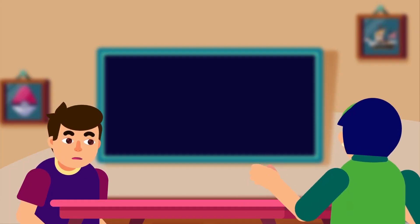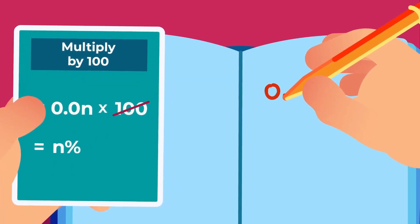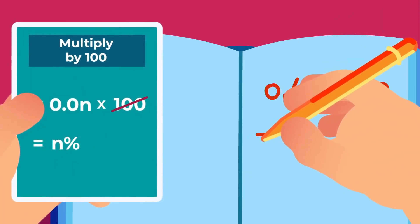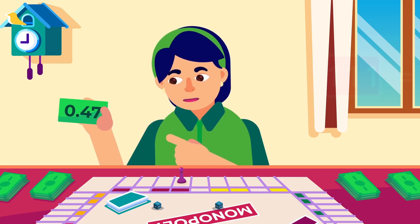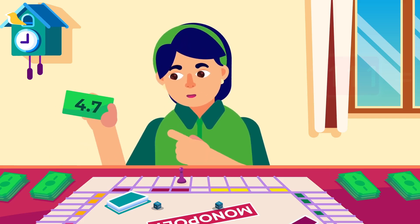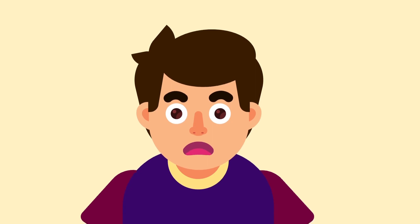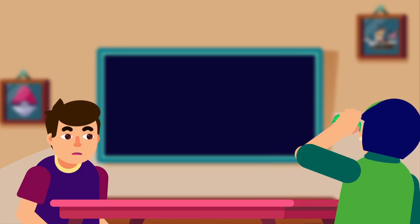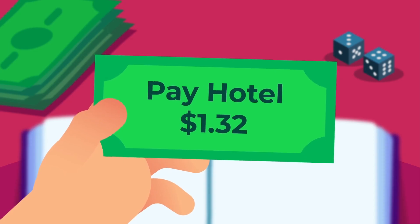And there you have it. Using a shorter method, we could directly multiply 0.47 with 100 to yield 47%. We can do the conversion by simply moving the decimal point two units to the right, and we get the same answer as before. Now, try it with other fake money: $1.32.